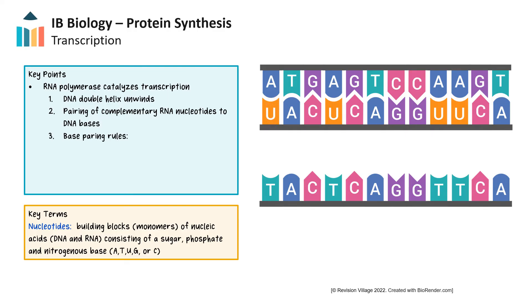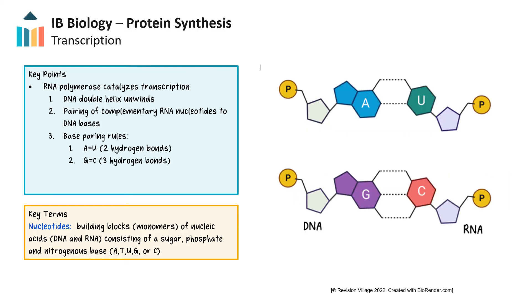This pairing involves hydrogen bonds. AU forms 2, while GC forms 3, ensuring accurate complementary pairing between bases. As RNA polymerase moves down the DNA, it links RNA nucleotides together with covalent bonds. Once the mRNA segment is transcribed, it undergoes modifications and exits the nucleus through a nuclear pore to enter the cytoplasm.